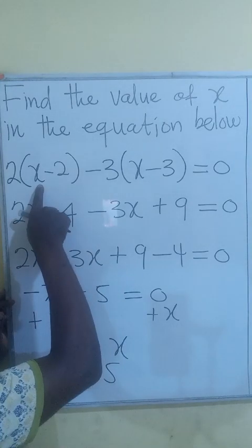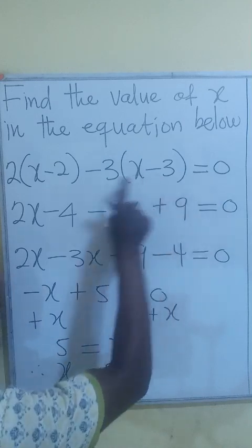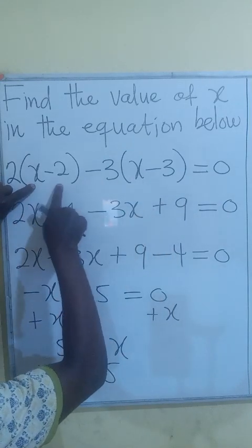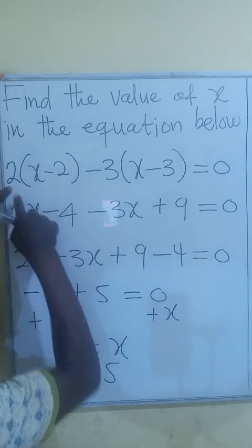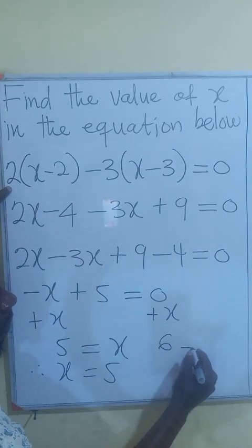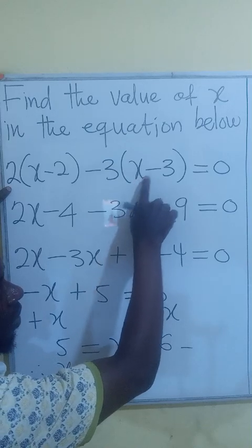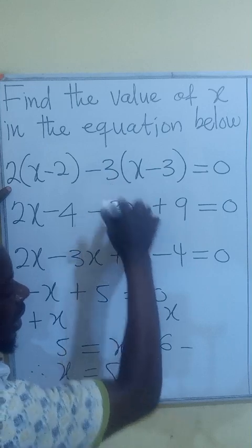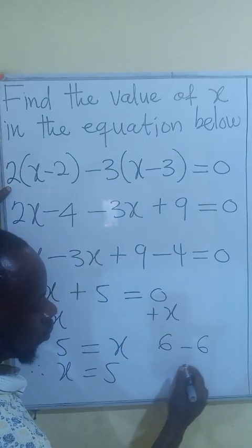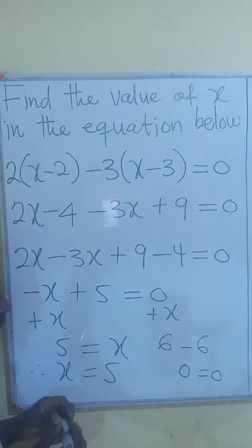Meaning if 5 is replaced by x, we are going to get 0. Let's see. If 5 is here, that will give you 3. Right? 5 minus 2 will be 3. 3 times 2. You get 6. If 5 is here, it will be 5 minus 3 will be 2. 2 times 3. That will also be 6. So we get 0 equals to 0. So the value of x is actually 5.